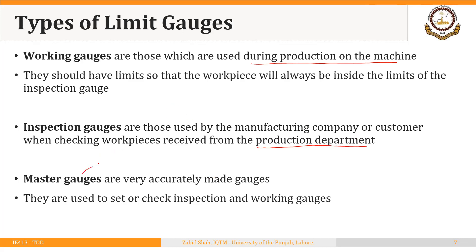Master gauges are very accurately made gauges used to check or set the working gauges and inspection gauges — in other words, they are used to calibrate working gauges and inspection gauges. The tolerance applied to master gauges is much tighter than that applied to working gauges and inspection gauges. In this lecture we are basically focusing on the design of working gauges.